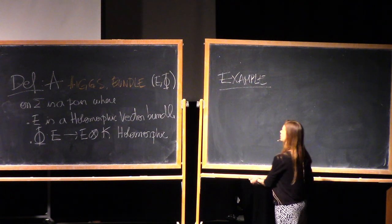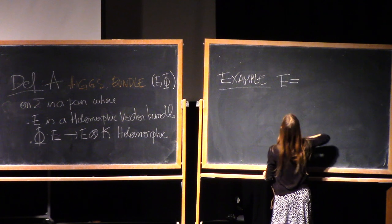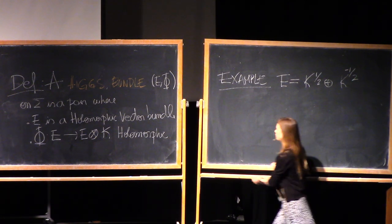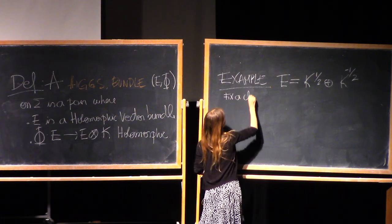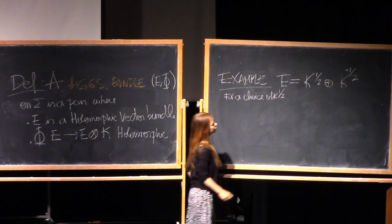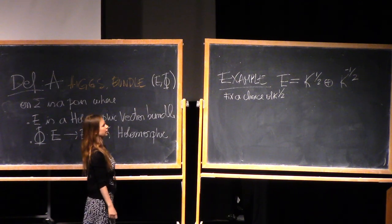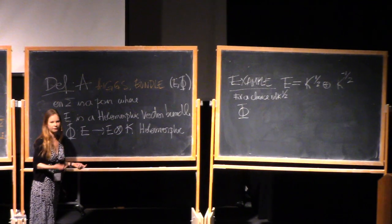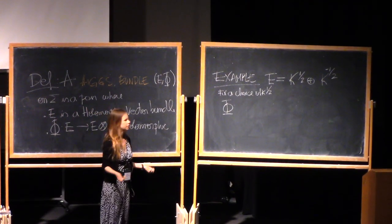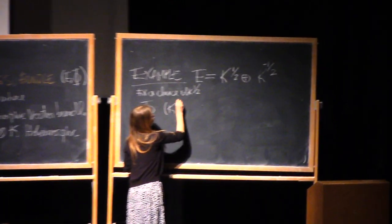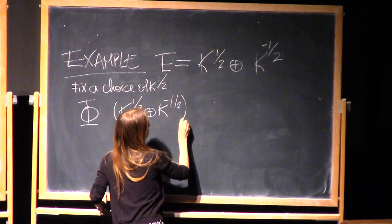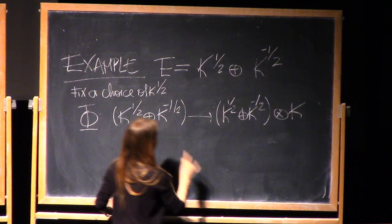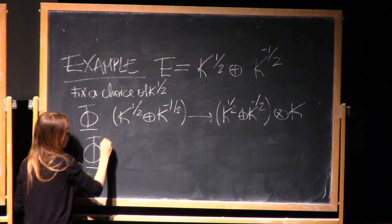Let's construct a classical example of Higgs bundles. We consider E as the sum of K^(1/2) plus K^(-1/2). We fix a choice of K^(1/2) and let the vector bundle be that. Since this is a rank 2 bundle, our Higgs field will be a 2-by-2 matrix. We want to have a 2-by-2 matrix which is off-diagonal, and consider what the entries are.